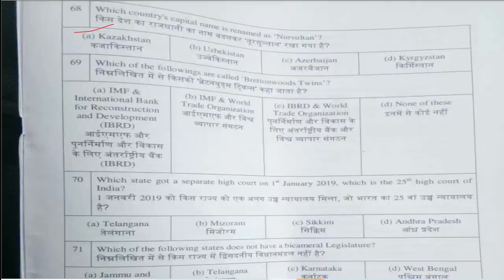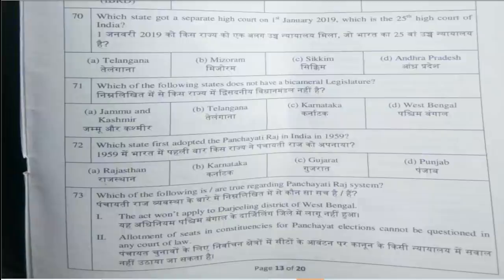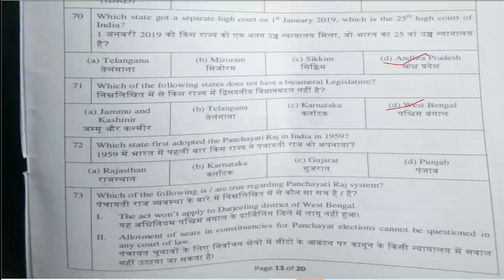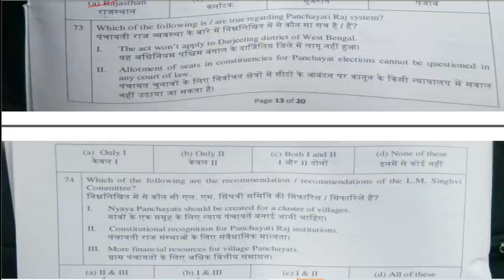Question number 68: Which country's capital name was renamed as Nur-Sultan? Answer is option A, Kazakhstan. Question number 69: Which of the following are called the Bretton Woods twins? Answer is the IMF and International Bank for Reconstruction and Development (IBRD). Question number 70: Which state got a separate High Court on 1st January 2019, which is the 25th High Court of India? Answer is option D, Andhra Pradesh.